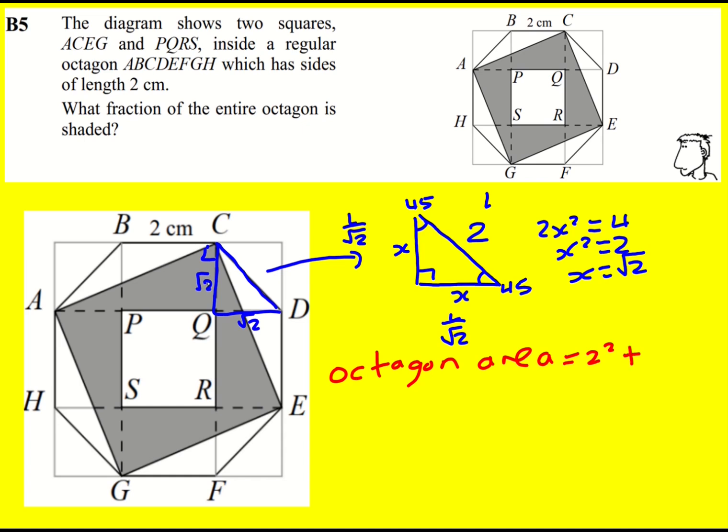And then I'm going to have 4 triangles, which are half times root 2 times root 2. And then 4 rectangles, 4 times 2 root 2.